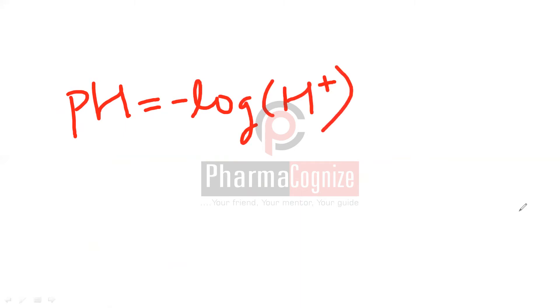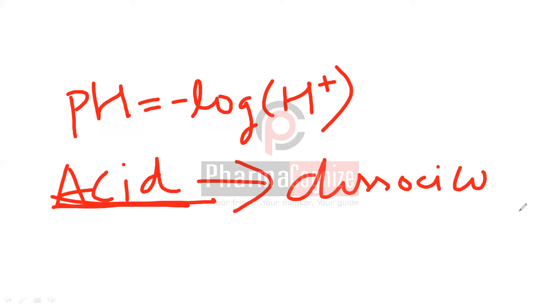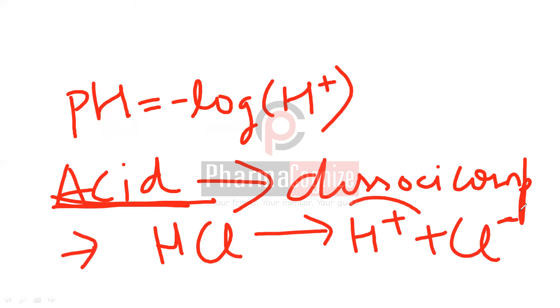If we are talking about any acid, if I have a strong acid that means it is dissociating completely. If we talk about HCl, it will dissociate into H plus and Cl minus. So whenever an acid will dissociate, it will release H plus. So stronger the acid, more would be its H plus concentration.